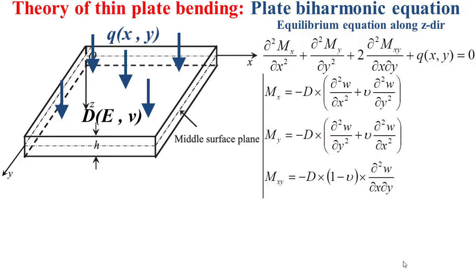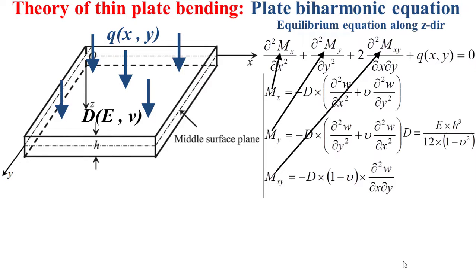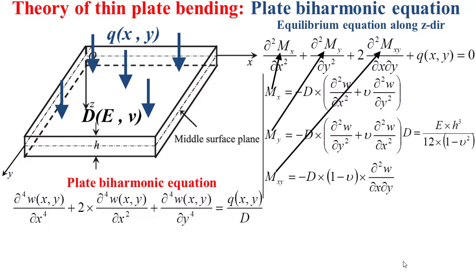The bending moments mx and my and the twisting moment mxy are expressed in terms of the flexural rigidity D and the deflection w, as shown by the formula in this slide. The flexural rigidity D is expressed in terms of the Young's modulus E, the Poisson's coefficient nu, and the thickness h. When we inject the expressions of the bending moments mx, my, and the twisting moment mxy in terms of the deflection w, we obtain the plate bi-harmonic equation as indicated in this slide.